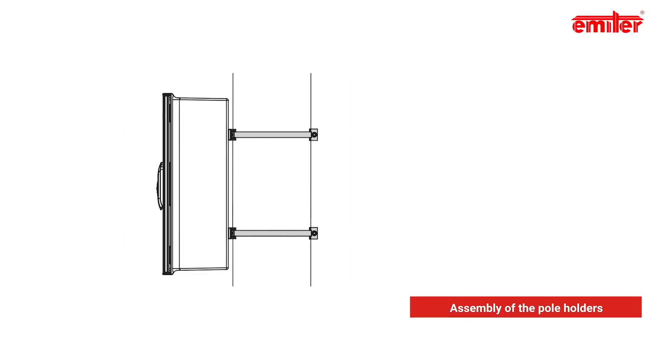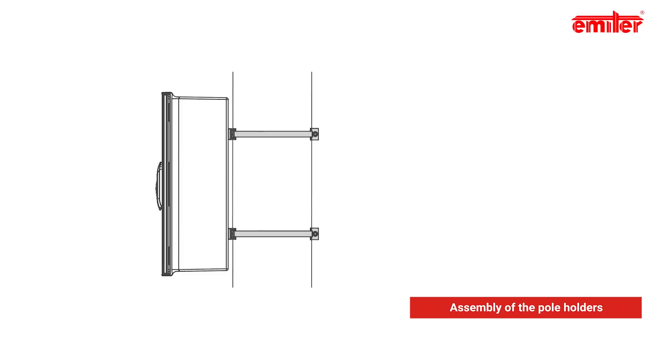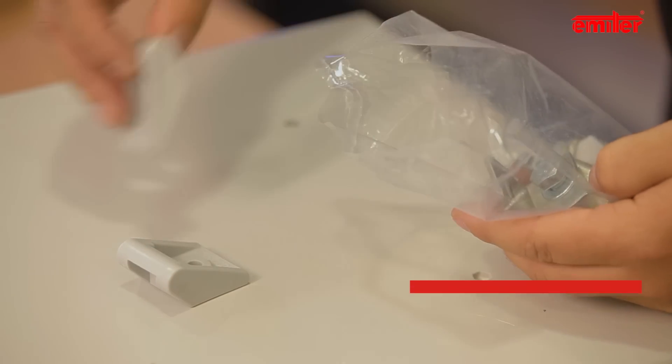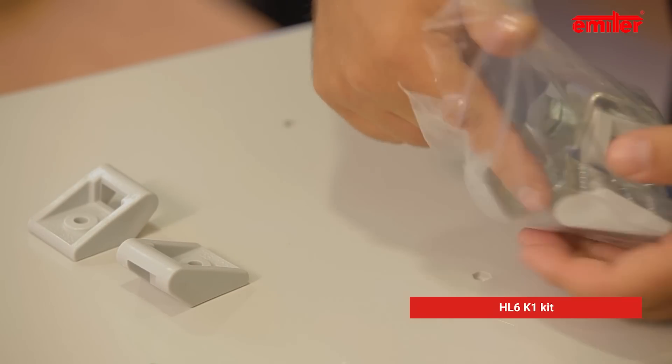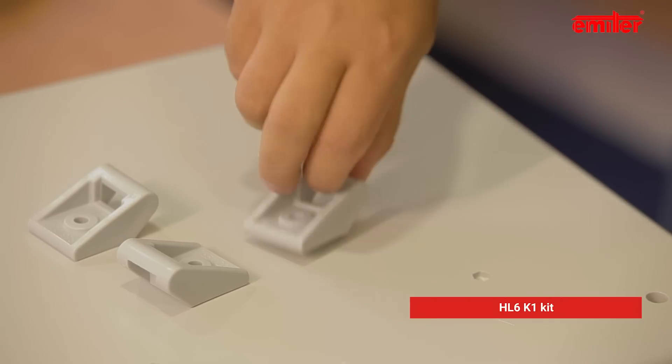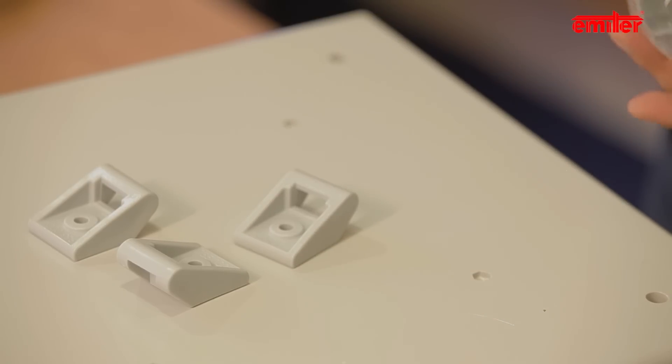In the end, we would like to present assembly of the pole holders. For this purpose, we will use set HL6K1, in which you will find a full set of accessories for installation of one enclosure. We start with the assembly of plastic elements. There are four holes on the back of the enclosure.